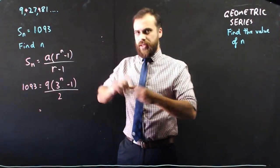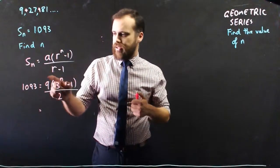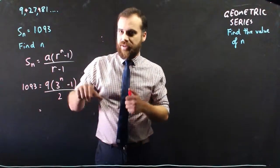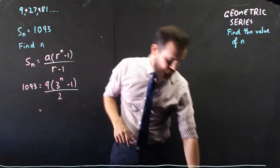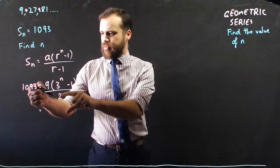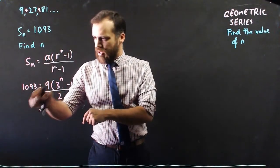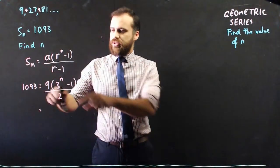Okay, now it's going to be tempting here to expand those brackets, 9 times 3 to the n, 9 times this. You can do that, but I think it just makes your life more complicated. A better way to go is to multiply everything by the bottom, multiply everything by 2, that'll get rid of the 2 from there. Divide everything by the 9, that'll get rid of the 9 from there.